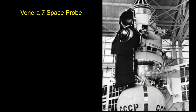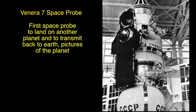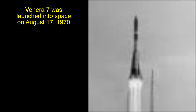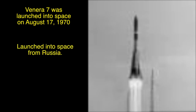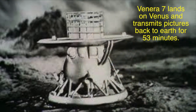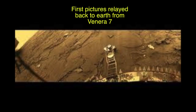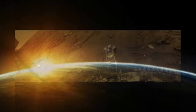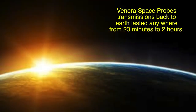Venera 7 space probe was the first space probe to land on another planet and transmit pictures back to Earth. Venera 7 was launched on August 17, 1970 from Russia. It arrived at Venus on December 15, 1970 and descended to its surface. Venera 7 landed on Venus and transmitted pictures back to Earth for 53 minutes. Venera space probe transmissions back to Earth lasted anywhere from 23 minutes to 2 hours.